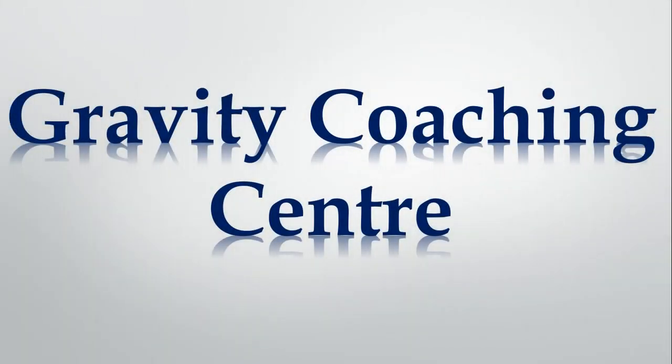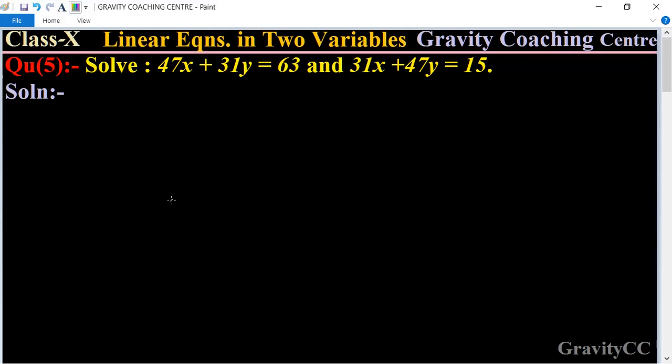Welcome to our channel Gravity Coaching Center, Class 10, Chapter Linear Equations in Two Variables, Question Number 5. Solve 47x plus 31y equals 63 and 31x plus 47y equals 15. In this question, find the value of x and y.